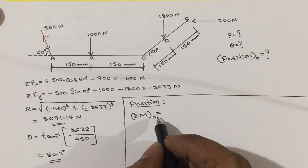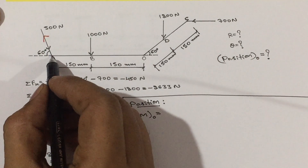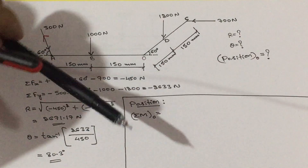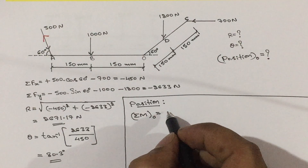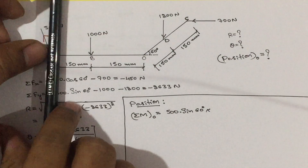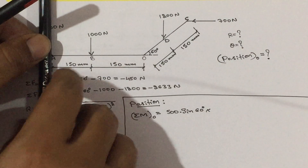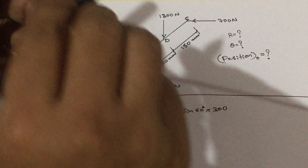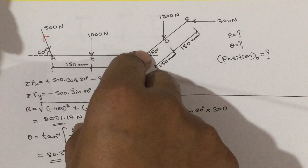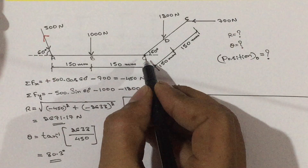Now calculate the sum of moments of all forces with respect to point O. Starting with the first force: the vertical component is 500 sin 60°, acting at point A. The perpendicular distance between this force and point O is 150 + 150 = 300 mm. Rotating the finger at O in the force direction, it rotates anticlockwise, so it is negative.